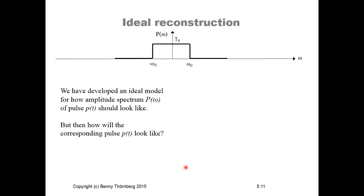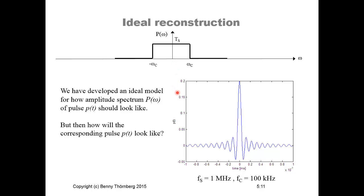We have developed an ideal model for the amplitude spectrum P(ω) of the pulse P(t). But since this pulse is defined in the frequency domain, we need to compute the inverse Fourier transform to see how it looks in the time domain. This example is computed for a sampling frequency of 1 MHz and a cutoff frequency Fc equal to 100 kHz.